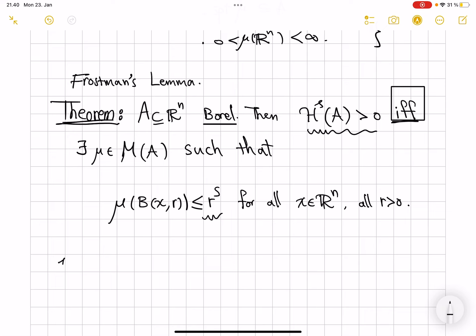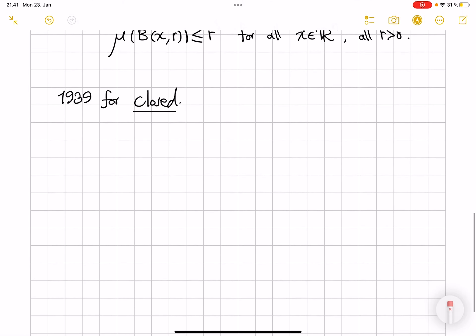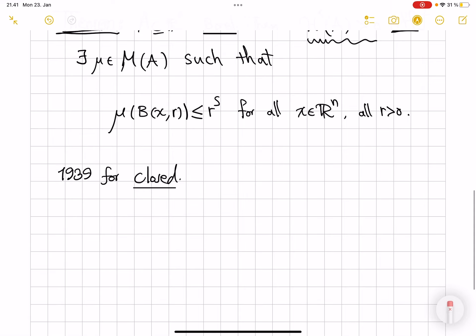Frostman proved this indeed in 1939 for closed sets, not all Borel sets. And even Matila's book proves it for closed sets, basically. It allows also for a countable union of closed sets, but that is not much more improvement compared to how much more work it takes to go from closed sets to Borel sets. I will talk about other applications of Frostman's lemma to a few other things in a separate video. So, for this video, let's focus on deducing this lower bound on the dimension of product set using Frostman's lemma.